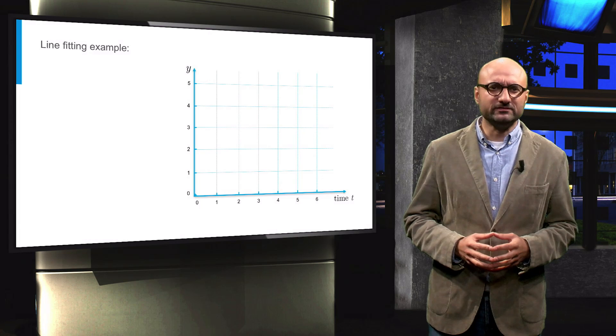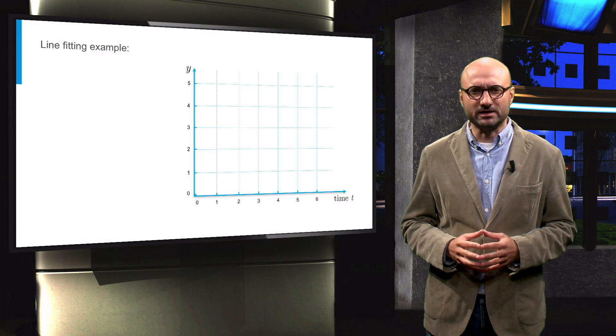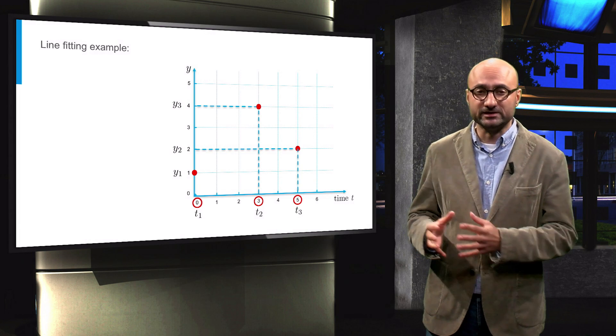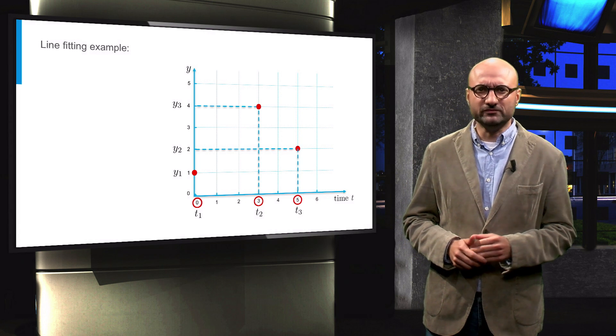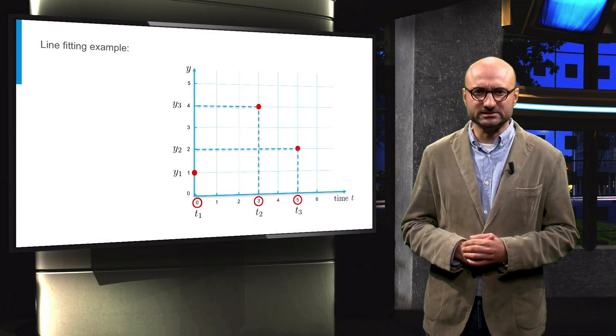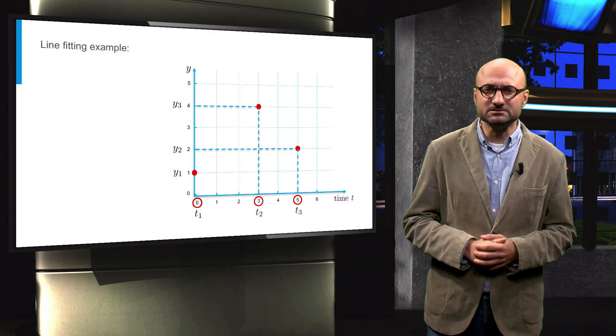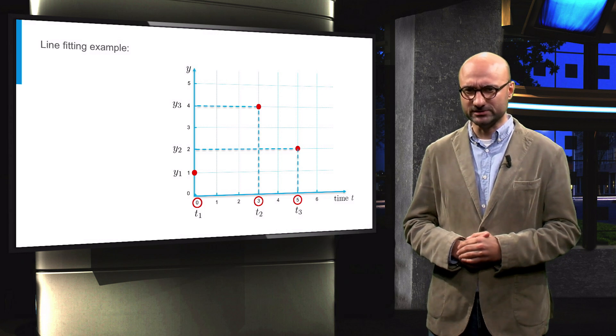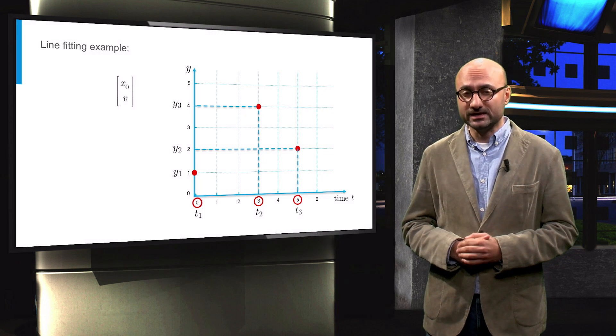Let's assume that we have three observations at time equal to 0, 3, and 5 respectively. And we want to fit a line to these three observations, or in other words, we want to estimate the initial position at time 0, that is x0, and the velocity v.